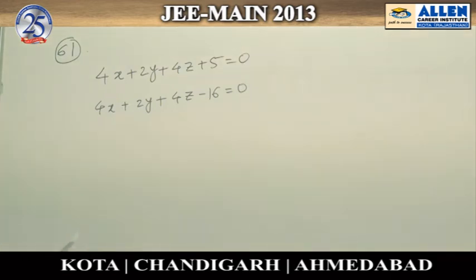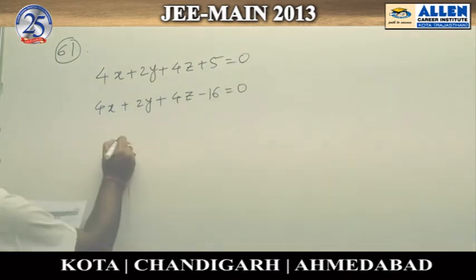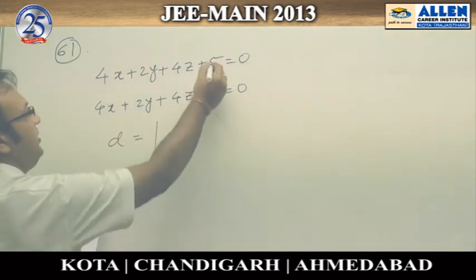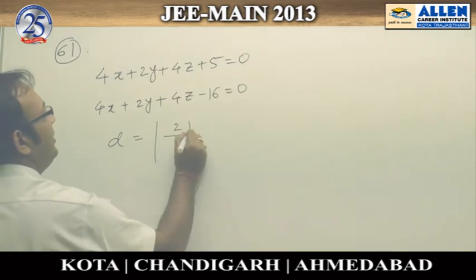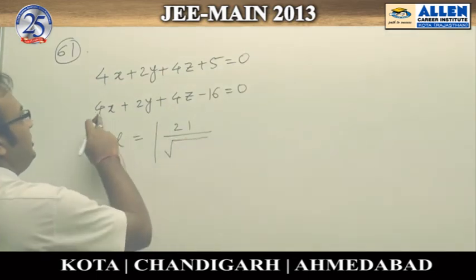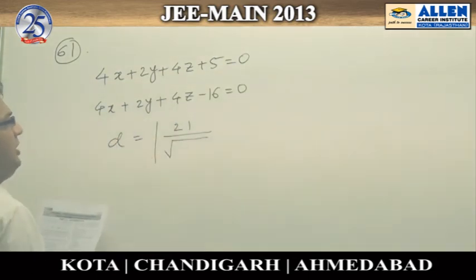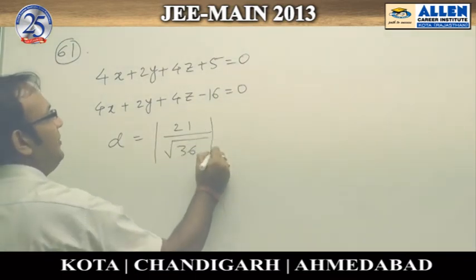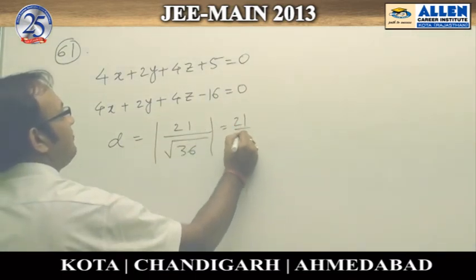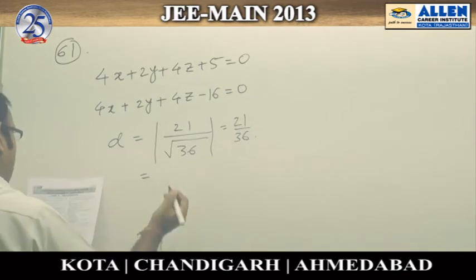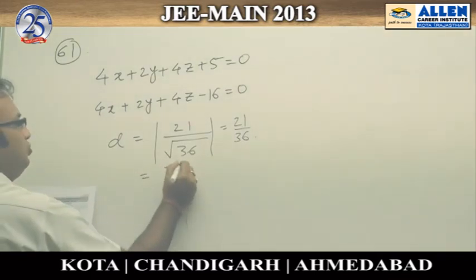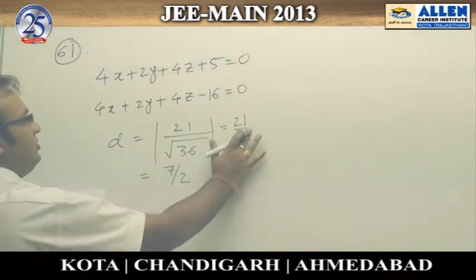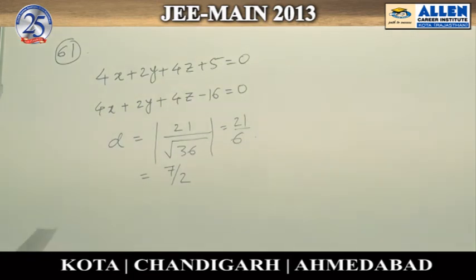Now these are two parallel planes having equal x, y, z coefficients and we have to find the distance between them. Applying the formula directly, d = |c1 - c2| / sqrt(a² + b² + c²), we get 21 / sqrt(16 + 16 + 4) = 21 / sqrt(36) = 21/6 = 7/2. This is option number 3.